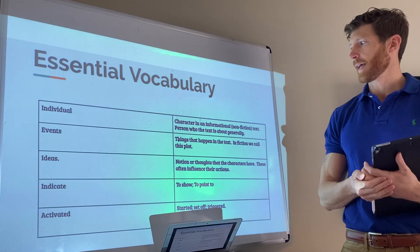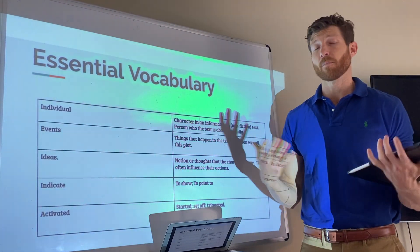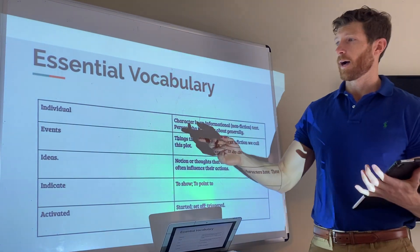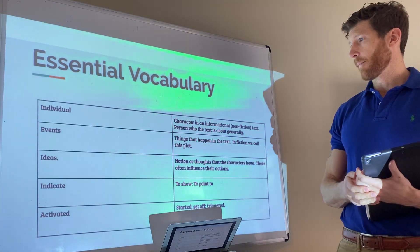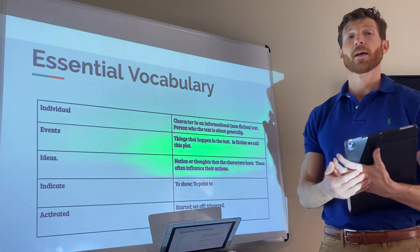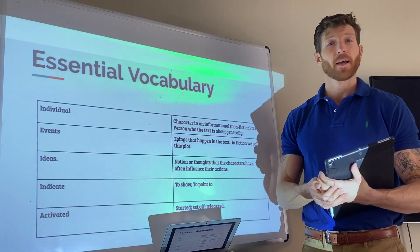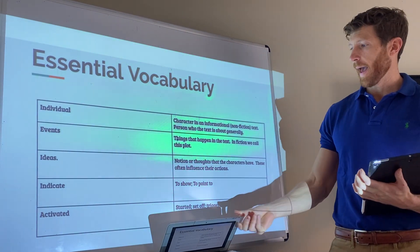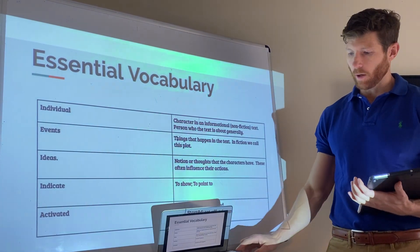Events are things that happen in the text. In fiction — in the stories we read — we call these plot points. In an informational text, we're going to call them events. Ideas are notions or thoughts that the characters have; these often influence their actions. Indicate means to show or to point to. And activated means started, set off, or triggered.